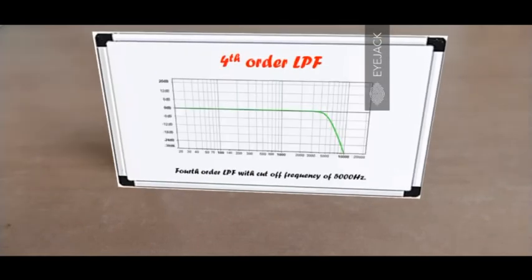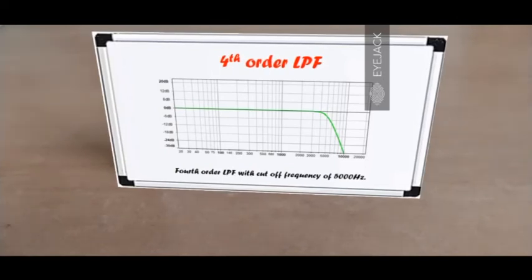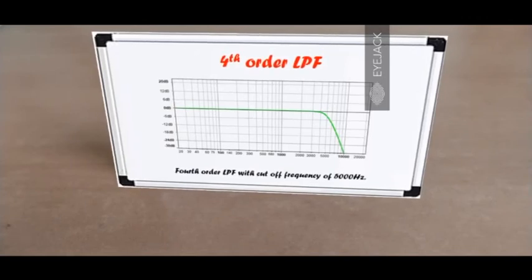This is a fourth order low-pass filter with a cutoff frequency of 5000 Hz. Notice how the slope is getting steeper. Higher the order, steeper the curve, and greater the attenuation — which is most important — but also greater the complexity, because you're going to use more and more components to achieve the higher order filtering.